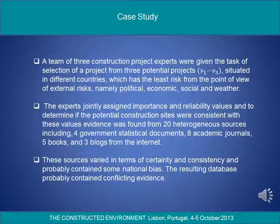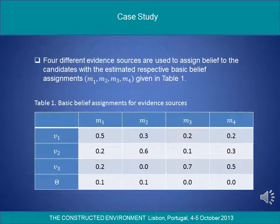These sources varied in terms of certainty and consistency and probably contained some national bias. The resulting database probably contained conflicting evidence. Four different evidence sources are used to assign belief to the candidates with the estimated respective basic belief assignments M1 to M4, given in Table 1.